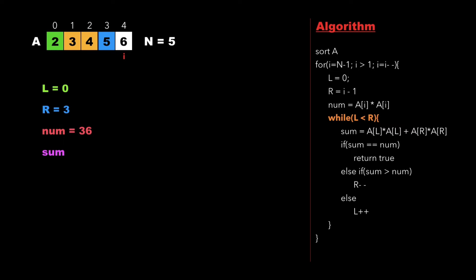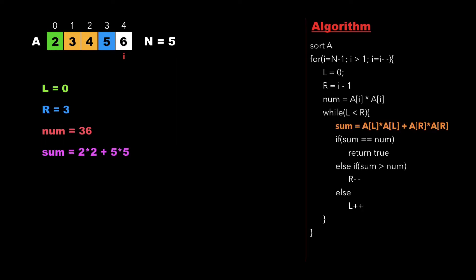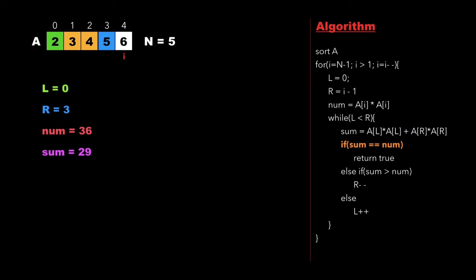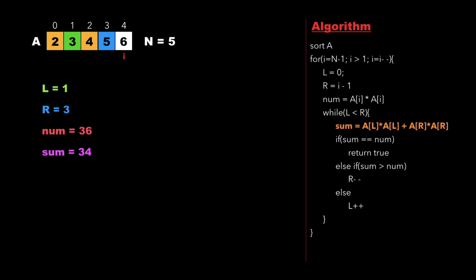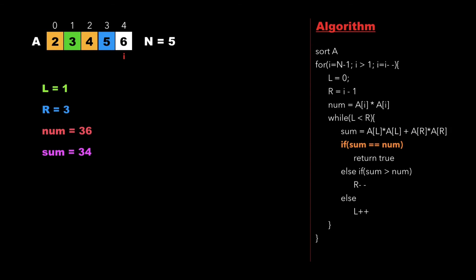Since 0 is less than 3, we calculate sum as a[l] × a[l] + a[r] × a[r], that is 2×2 + 5×5, which is 29. We check whether sum equals num. Since sum is not equal to num, we check whether sum is greater than num. Since 29 is not greater than 36, we increment l. Again 1 is less than 3, so we calculate the new value of sum as 34. We check whether 34 equals 36 — it does not. Neither is 34 greater than 36, so again we increment l.